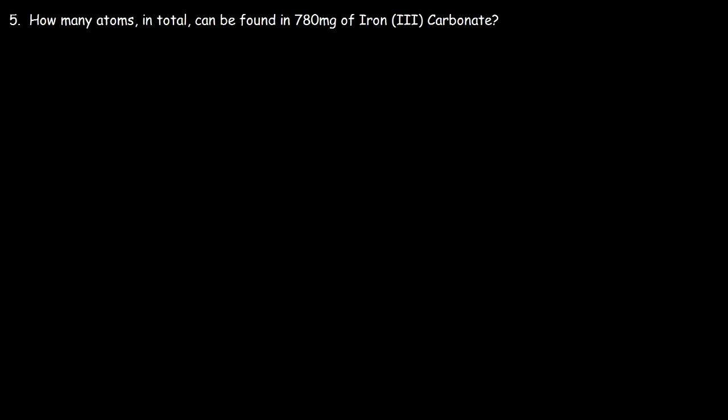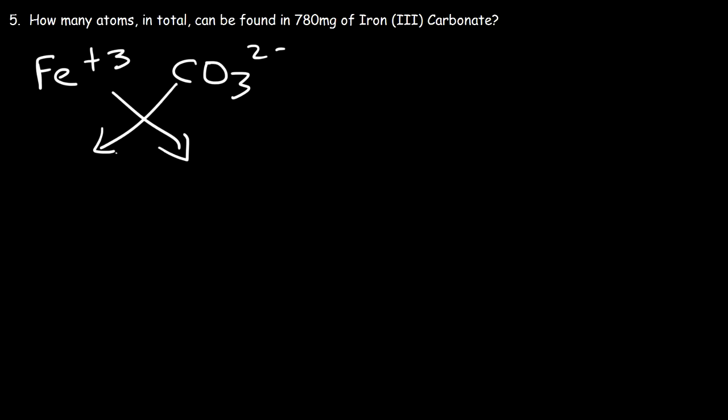Number five: how many atoms in total can be found in 780 milligrams of iron(III) carbonate? The first thing I'll do is write the chemical formula of iron(III) carbonate. This is an ionic compound, so prefixes like mono, di, tri, tetra won't help. We need to find the charges of the ions. Fe is a transition metal — the Roman numeral III specifies the charge, so Fe has a positive 3 charge. Carbonate is a polyatomic ion: CO3 with a negative 2 charge. Switching the charges as subscripts, we get Fe2(CO3)3. That's the chemical formula of iron(III) carbonate.